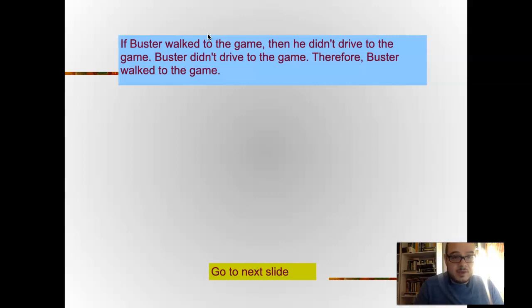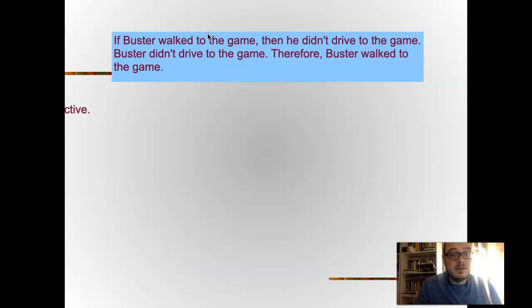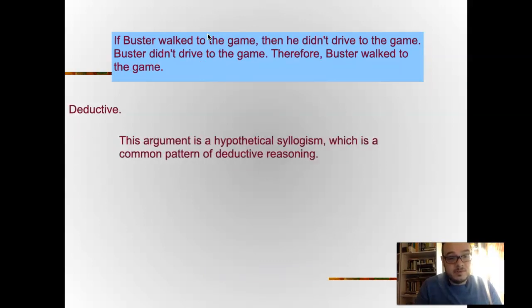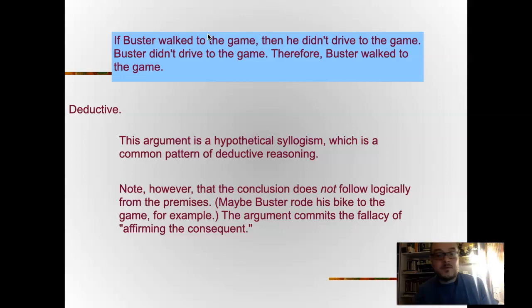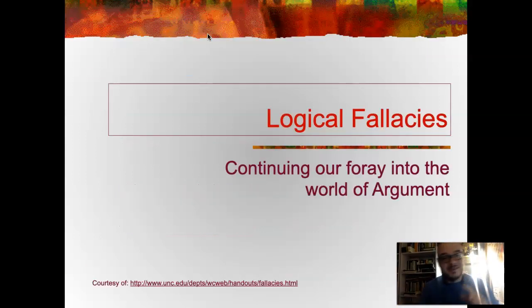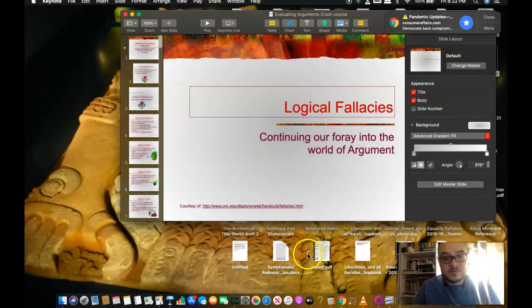'If Buster walked to the game, then he didn't drive to the game. If Buster didn't drive to the game, therefore Buster walked to the game.' Is this argument deductive or inductive? It's deductive — it is a hypothetical syllogism, a common pattern of deductive reasoning. However, note that the conclusion does not actually follow logically from the premises; Buster may have ridden his bike. This argument commits the fallacy of affirming the consequent, so it's a deductive argument but a bad one. We'll talk about fallacies in a later presentation.